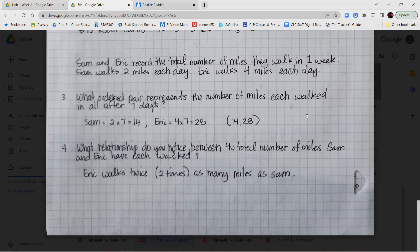What relationship do you notice between the total number of miles Sam and Eric have each walked? Eric walks twice as much or two times as many miles as Sam. So if Eric walks four, Sam walks two. If Eric walks eight, Sam walks four and so on. So Sam is always walking half as much as Eric. Eric is always walking twice as much as Sam.